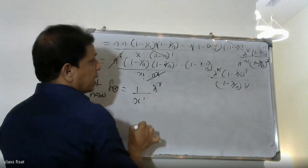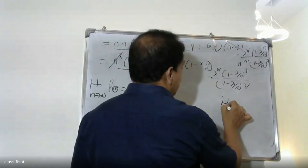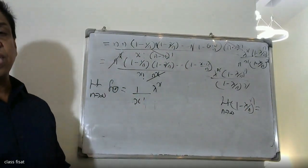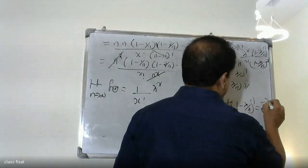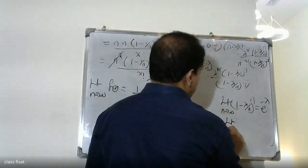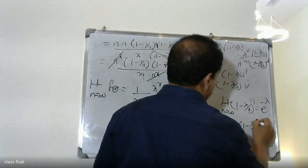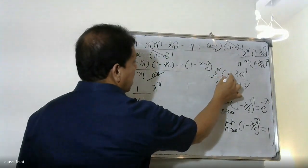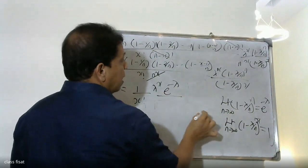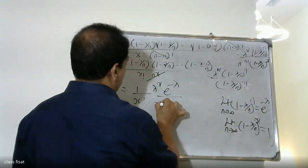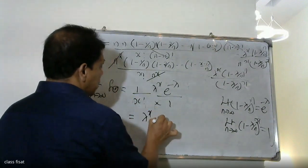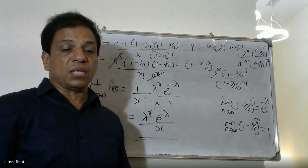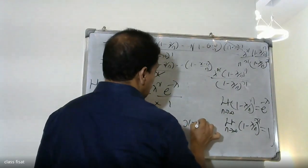n raise to x is cancelled with n raise to x. We apply the limit as n tends to infinity. The limit of 1 minus lambda by n raised to n equals e raise to minus lambda. The terms 1 minus lambda by n raised to x tend to 1. Therefore we get lambda raise to x times e raise to minus lambda divided by x factorial. This is the Poisson distribution probability function, where x equals 0, 1, 2, ...